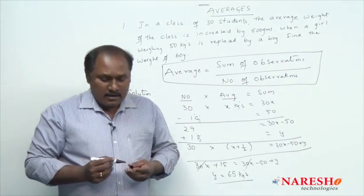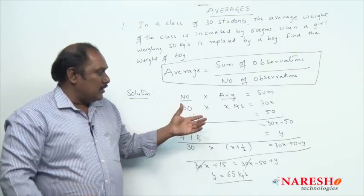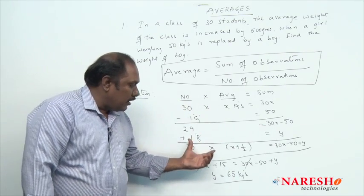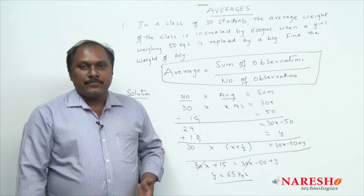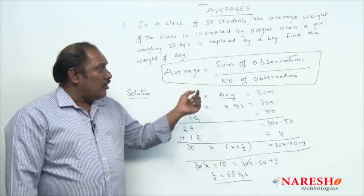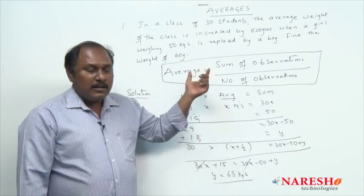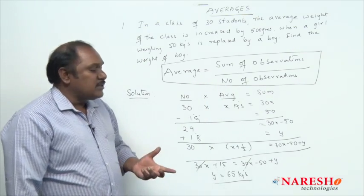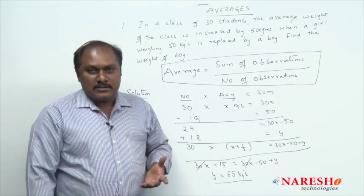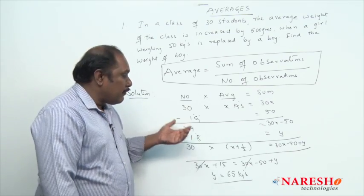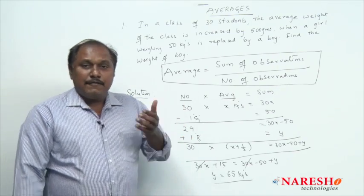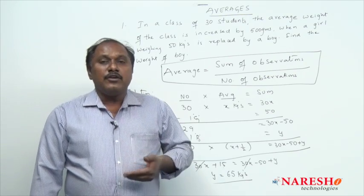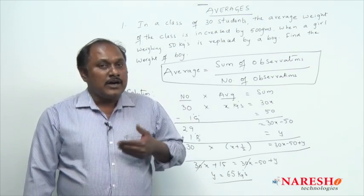Now, if you clearly see, by using the formula and solving this, we have to perform a lot of calculations. This is a drawback of using the formula. How to tell the answer for this question in exactly 5 to 10 seconds without performing all these calculations? For that, we should not use the formula — we have to use a logical idea.